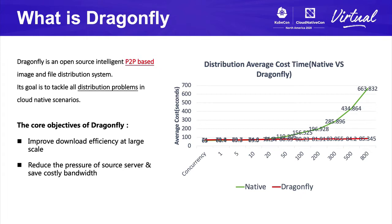In the chart, the x-axis represents the number of concurrent downloads, and the y-axis represents the download time. The green curve means download in native mode, and the red curve means download in Dragonfly mode. Through this chart, we can draw the following conclusion: with the increase of concurrent downloads, the average download time remains fairly consistent when using Dragonfly. At the same time, when the scale reaches a high level, the source server may even go down, leading to download failure. But using Dragonfly will not have this problem.